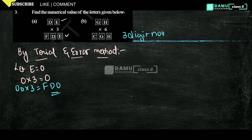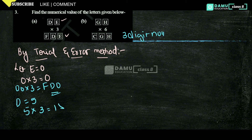3 ones are 3 — but D is 1. 3 twos are 6. 3 threes are 9. 3 fours are 12. 3 fives are 15 — so let D be 5. Then 5 into 3 gives 15: here 5, here 5, here 1 — yes, satisfied. So D equals 5.